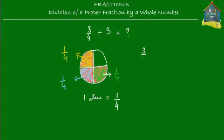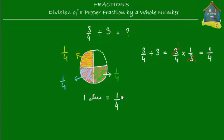Now let's find that out mathematically. We had three quarters of a pizza divided among three friends. Dividing by three is the same as multiplying by one over three. So three quarters divided by three equals three quarters times one over three. We simplify: three and three cancel out, leaving one times one over four times one, which equals one fourth. So three quarters divided by three gives you one fourth.